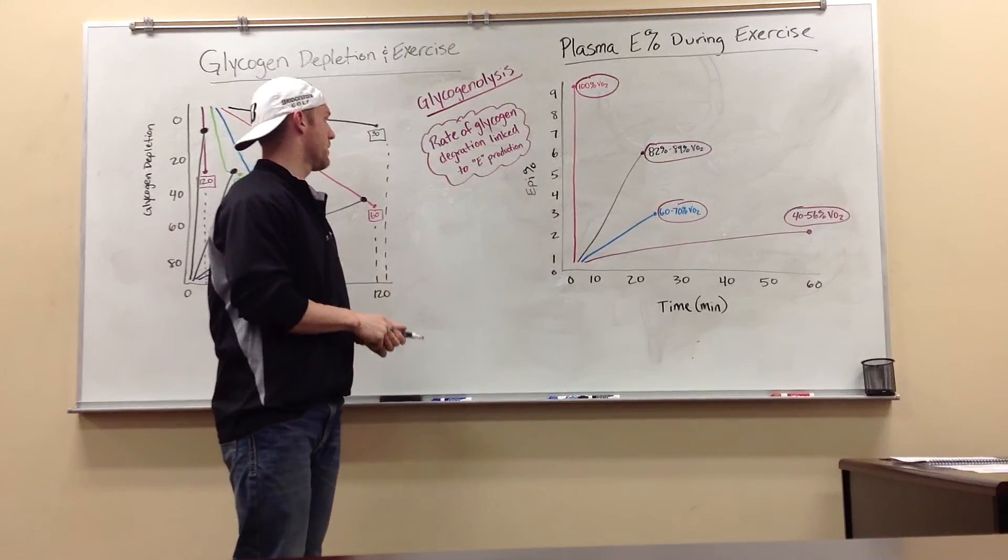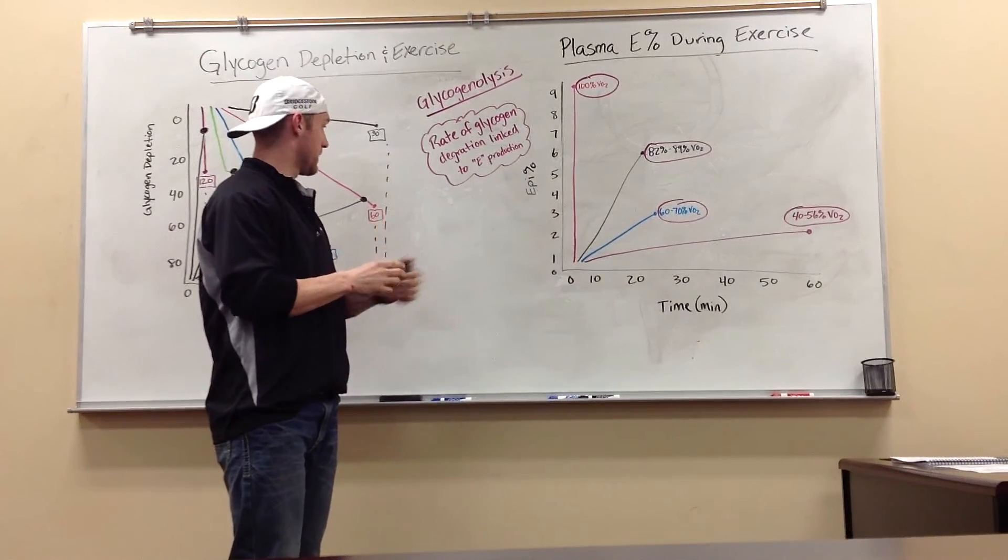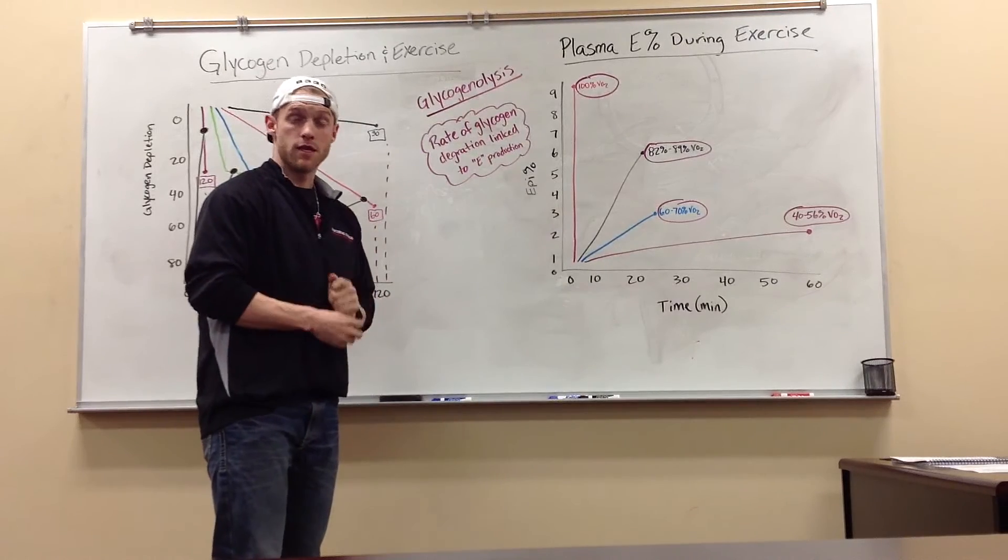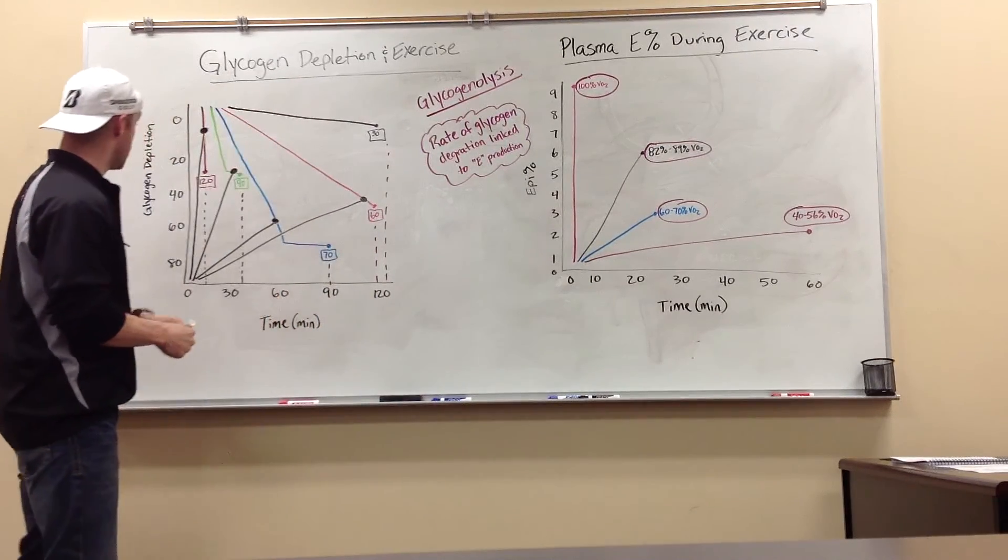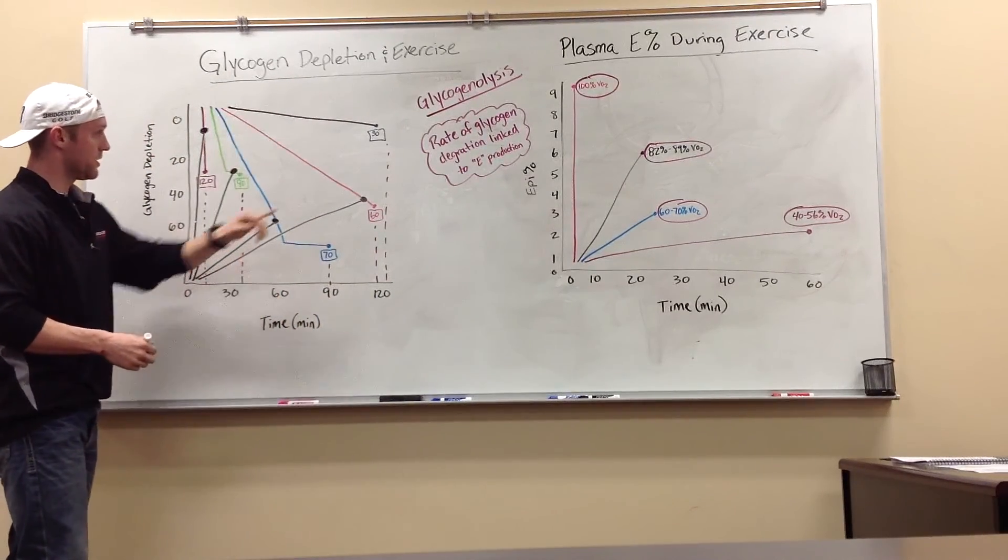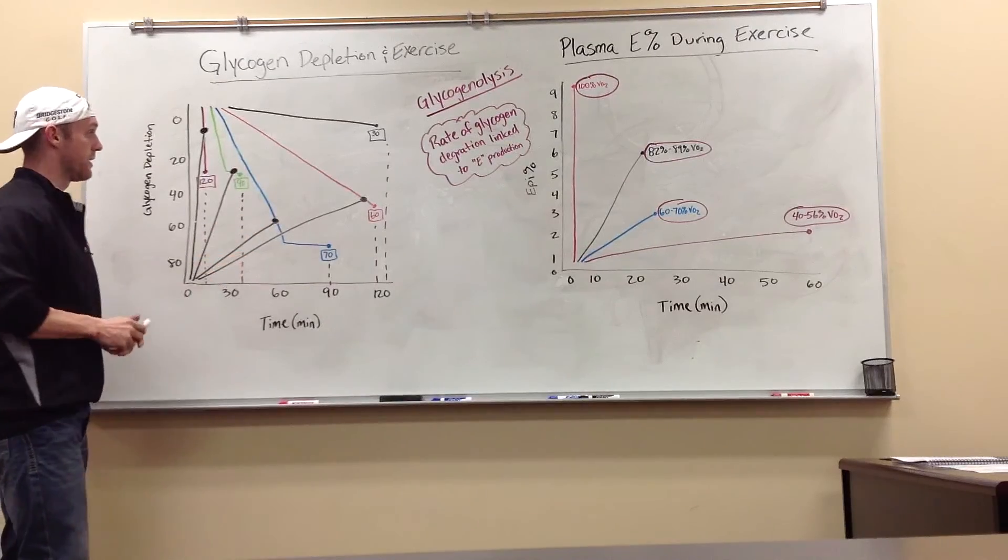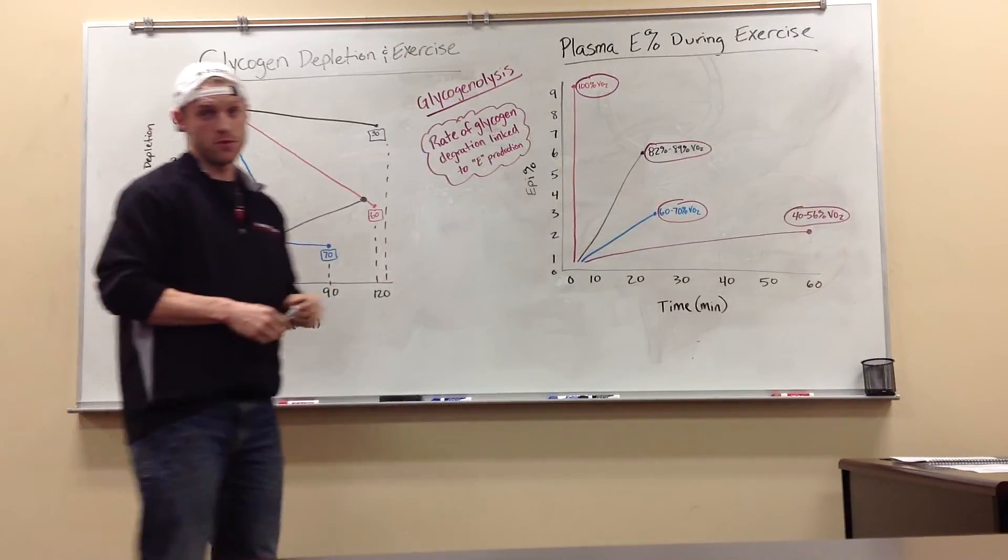Right there, the rate of glycogen depletion is linked to how much epinephrine that you need to produce. As you can see, between the two and actually combining, that's the relationship between both of them.